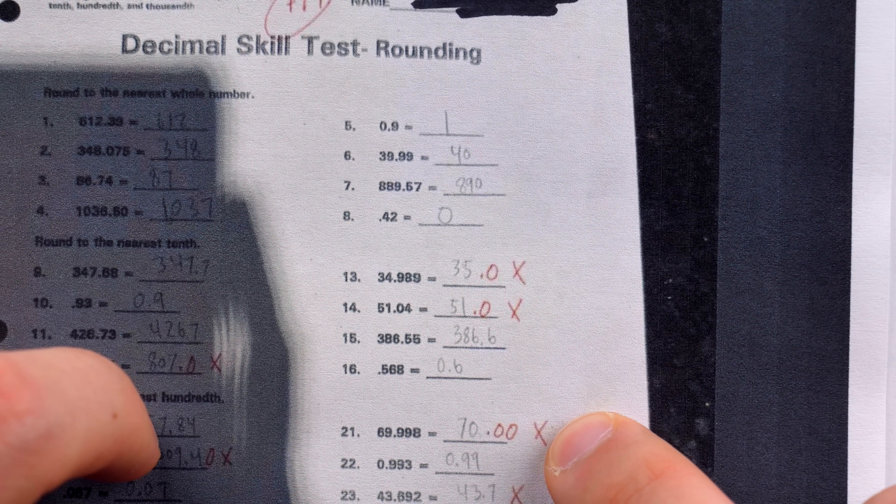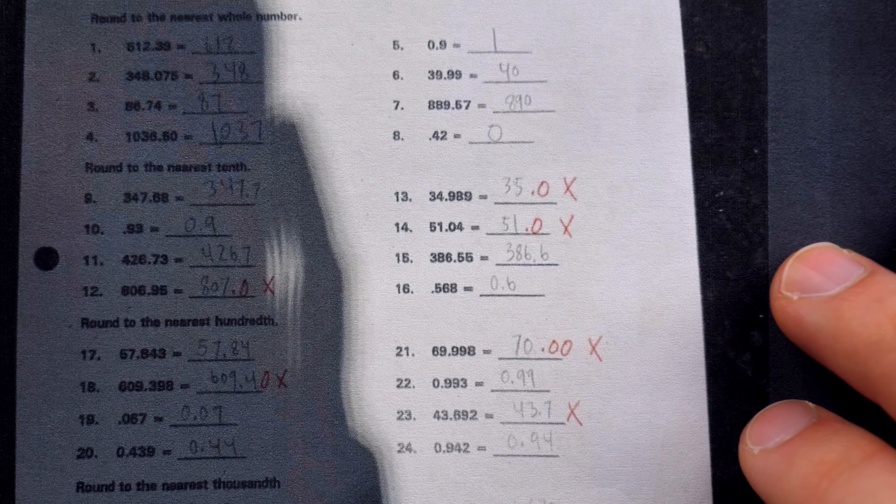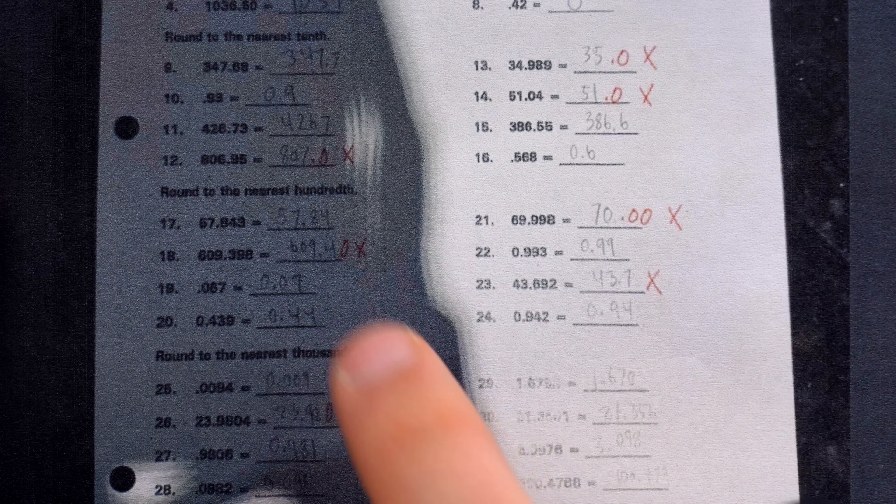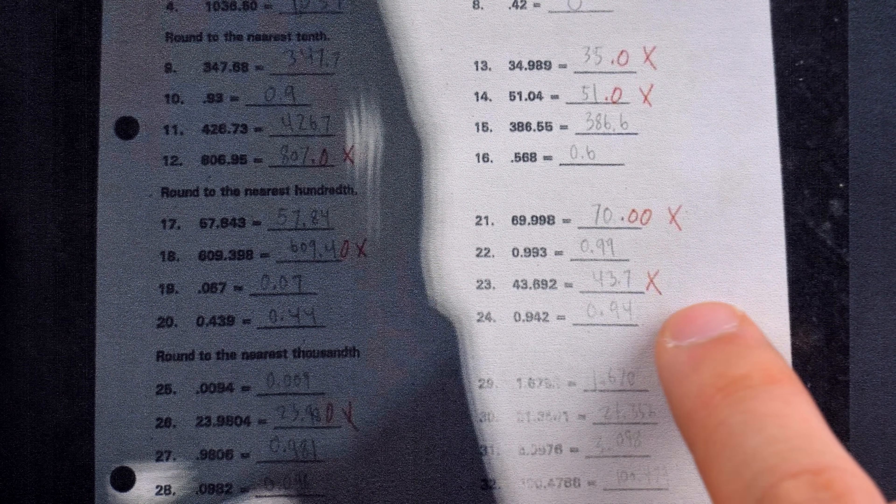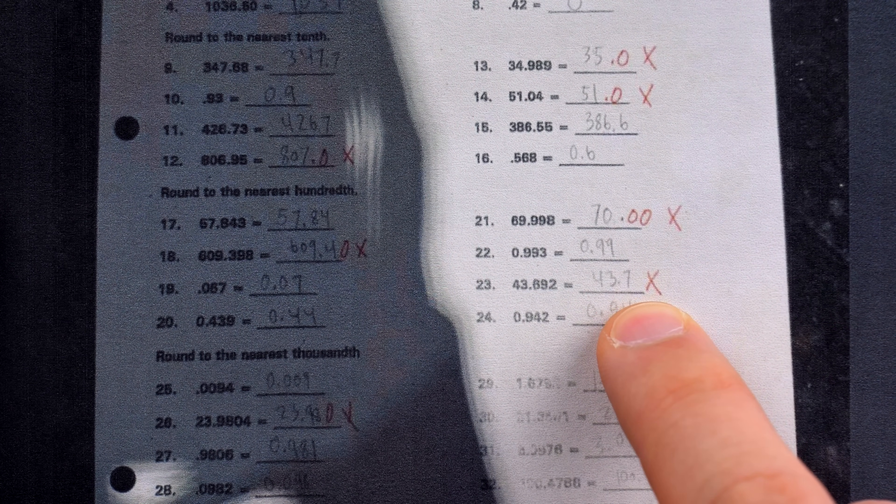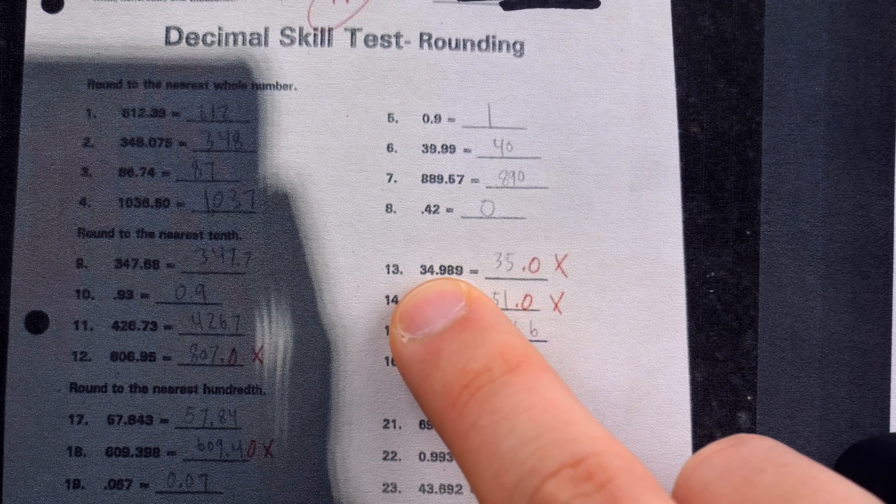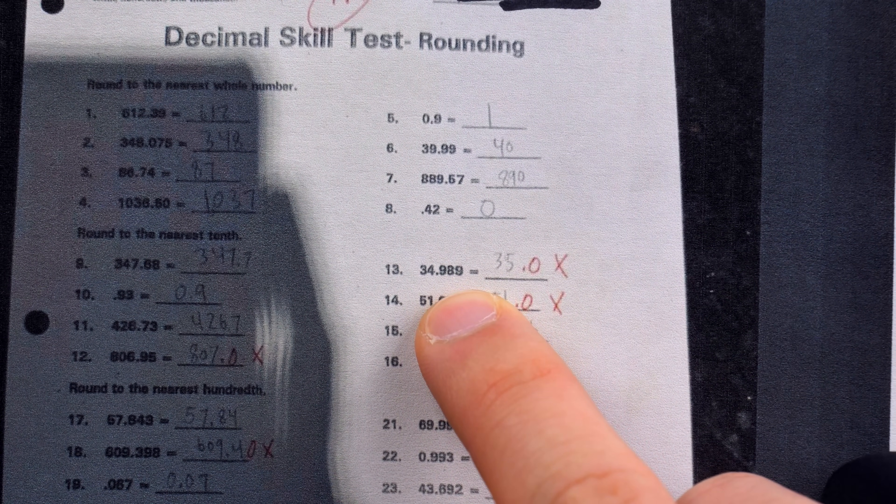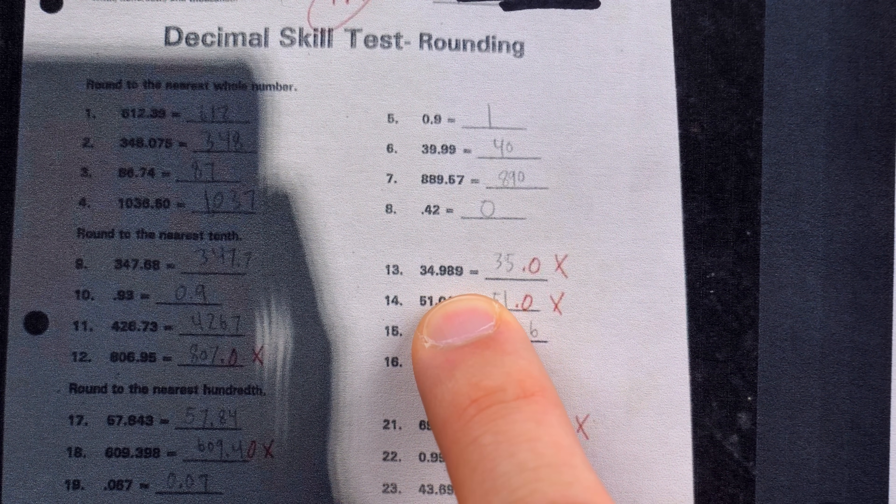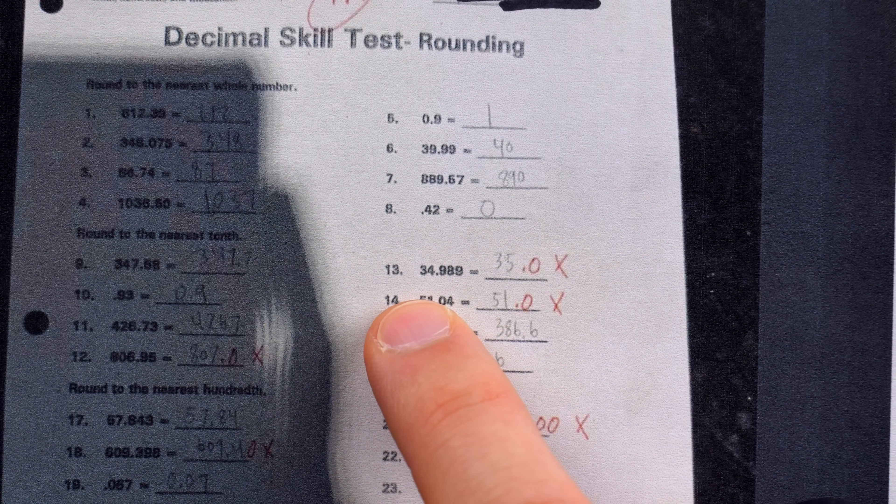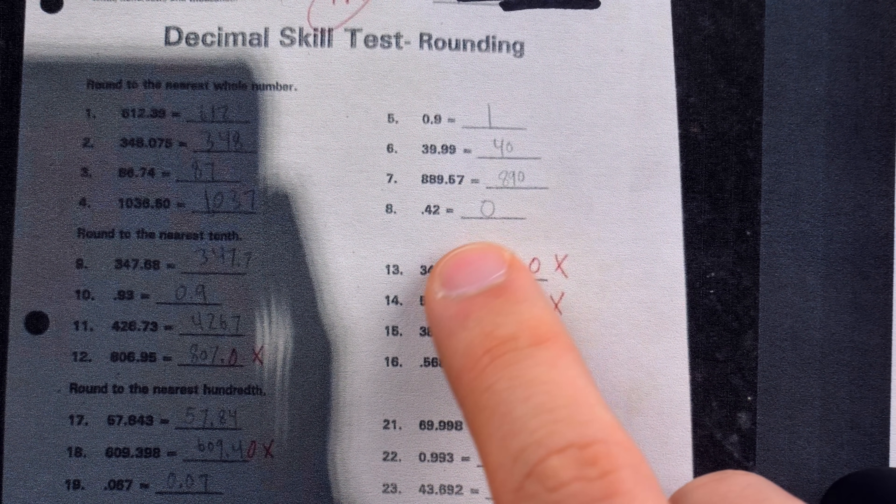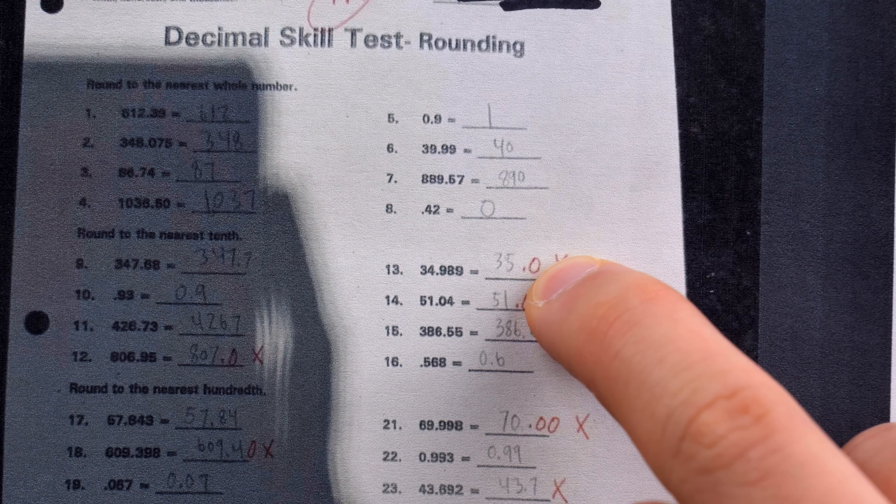Similar issue down here when asked to round to the nearest hundredth. It's that same mistake being made where you see all these x's except for here which was just a plain old mistake, but all of the other ones are missing zeros. The student said if we round 34.989 to the nearest tenth, well then I would actually get a whole of 35.